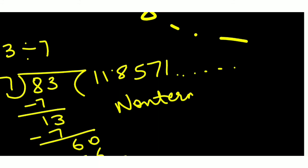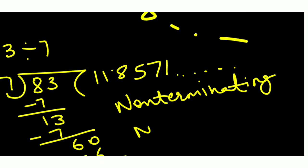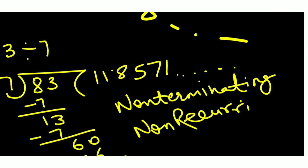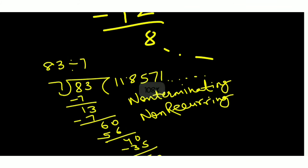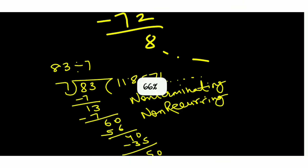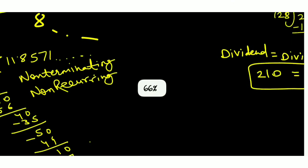After dividing 83 by 7, the decimal expansion continues without terminating and no digit group repeats. So it is non-terminating and non-recurring.